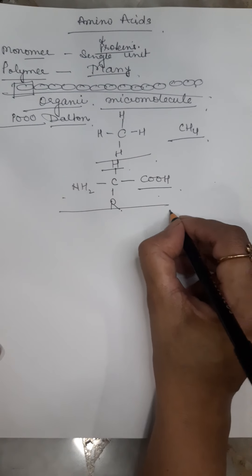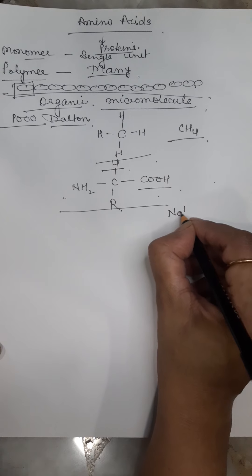There is one acidic group and one basic group. So the overall nature of amino acid is neutral.